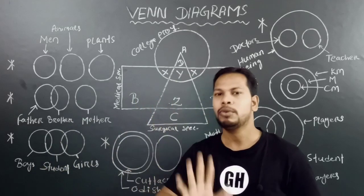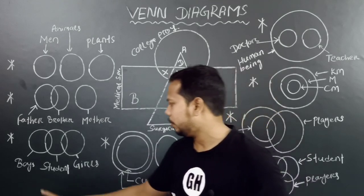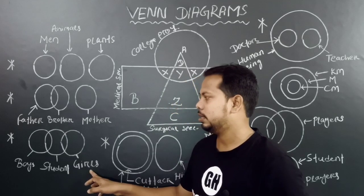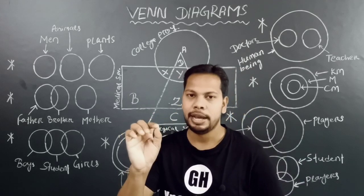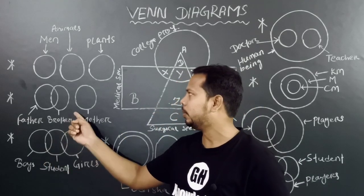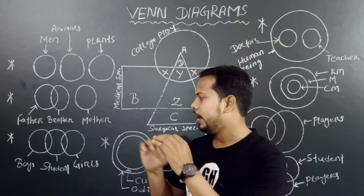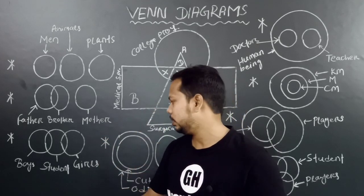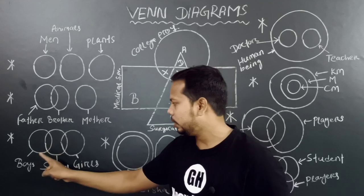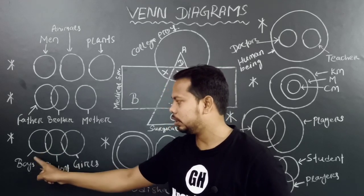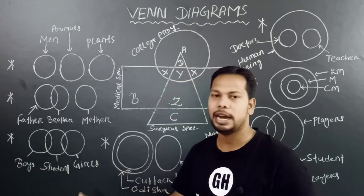If you have a question about this, I will give you a practice test so you have a very clear way of this. Boys, student, girls — this question is about boys, girls, student. You have 4 different diagrams. Boys means student, and girls means student. So this is our diagram.